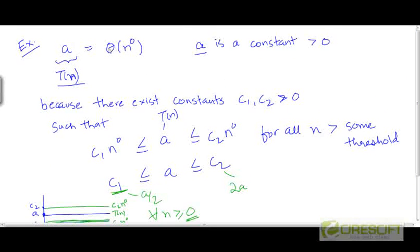Now instead of denoting theta of n to the power 0 as theta of n to the power 0, this is more commonly denoted as theta of 1 because n to the power 0 is 1. So any constant...